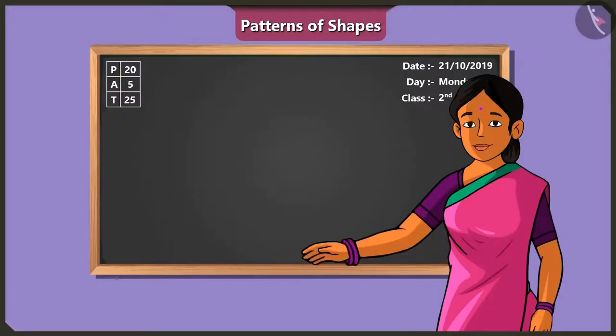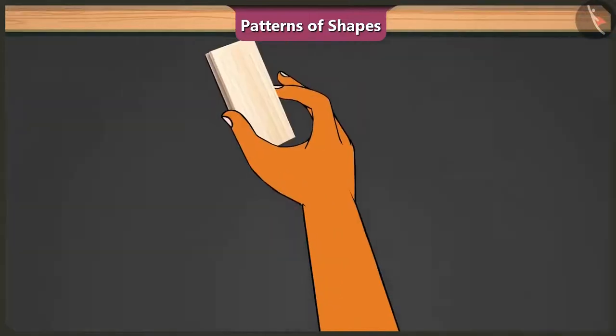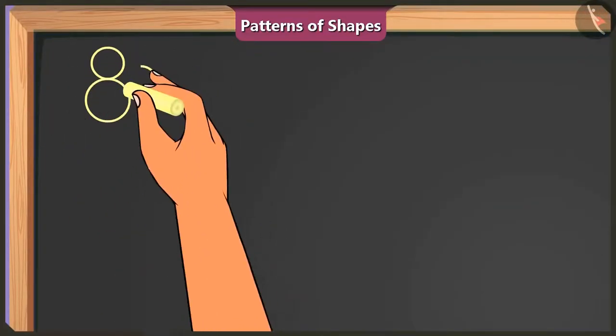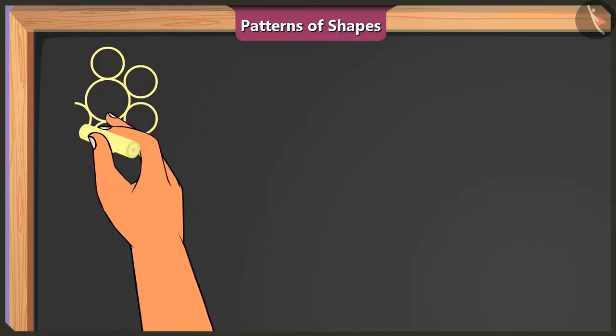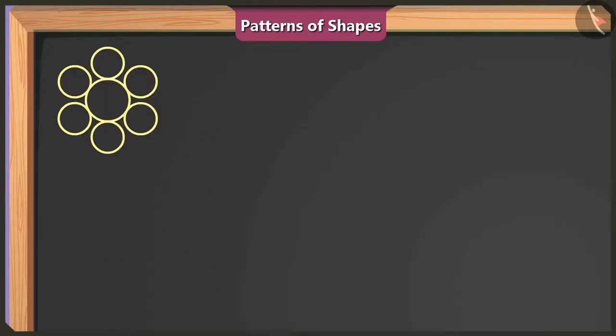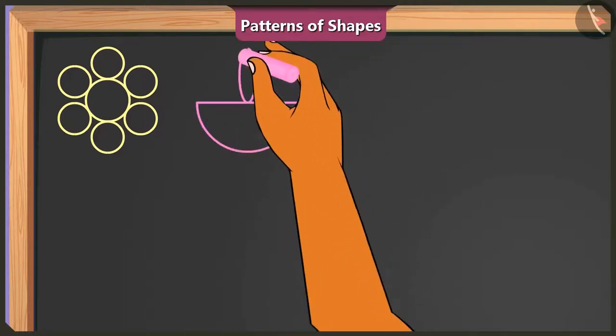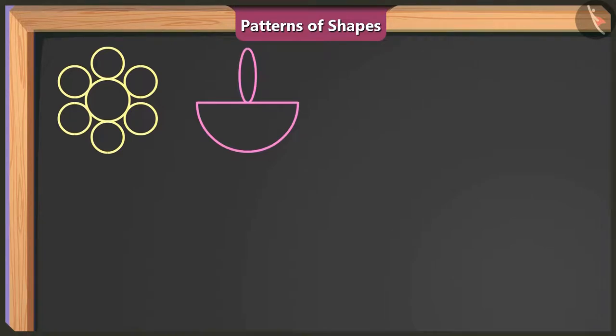We need to decorate this board. Okay, ma'am. On one corner of the board, we can use big and small circle shapes to make a flower. Next to this flower, I can draw a diya using a semi-circle and an oval shape in this manner.